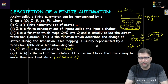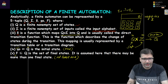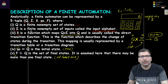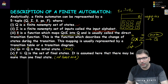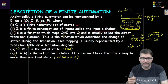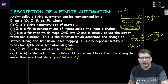We discussed the description of a finite state automata. There are five tuples we need to define: the finite set of states Q (the set in which an automata can be at any point in time), Σ (the set of alphabet or input symbols), the transition function which maps the current state and input symbol to a new state, the initial state, and the set of final states. Every automata must have at least one final state.